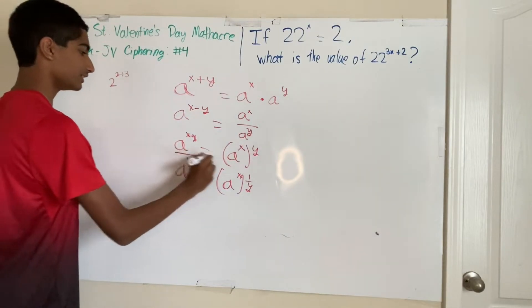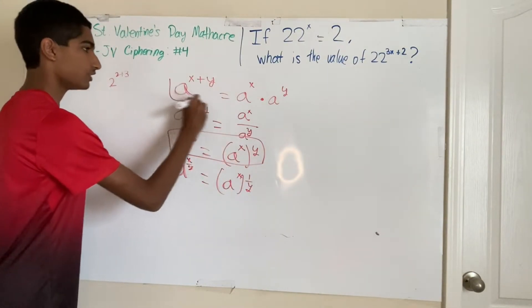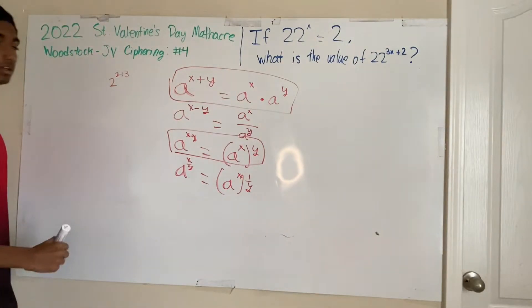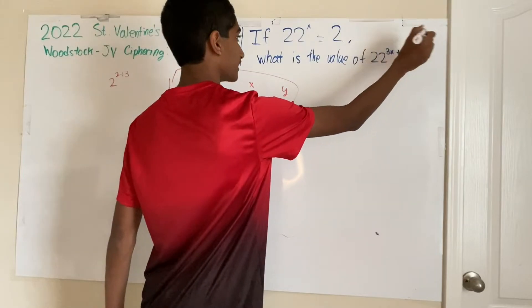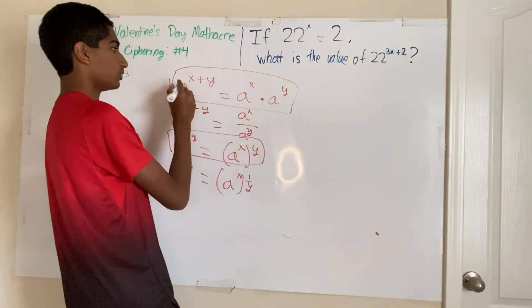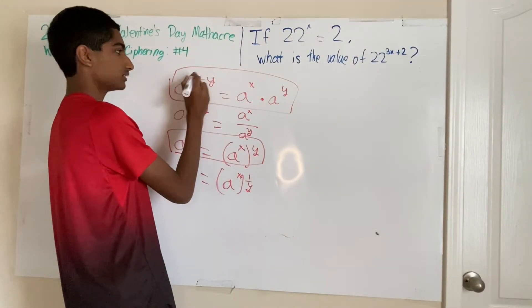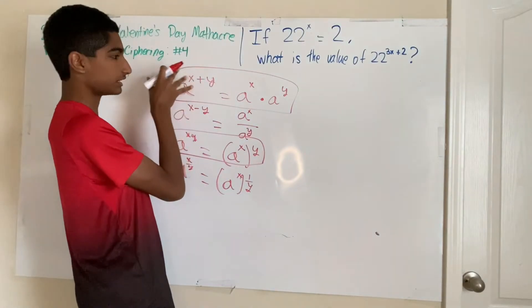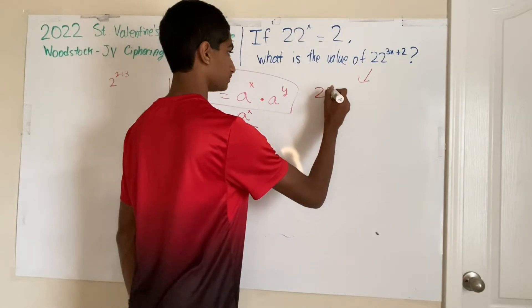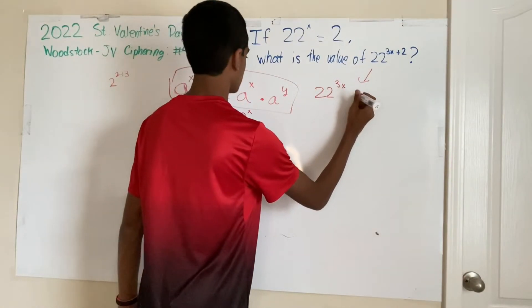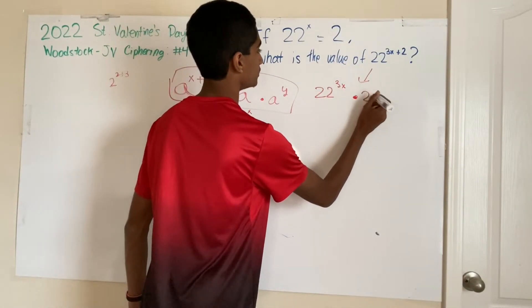Alright, anyways, we only need this one and this one to be able to solve the problem. And you can just do 22 to the power of 3x plus 2, and that is 22 to the 3x times 22 to the 2.